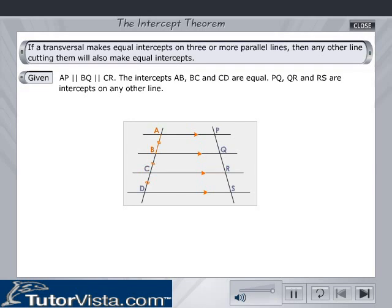The intercepts AB, BC and CD are equal. PQ, QR and RS are intercepts on any other line. To prove that PQ is equal to QR.